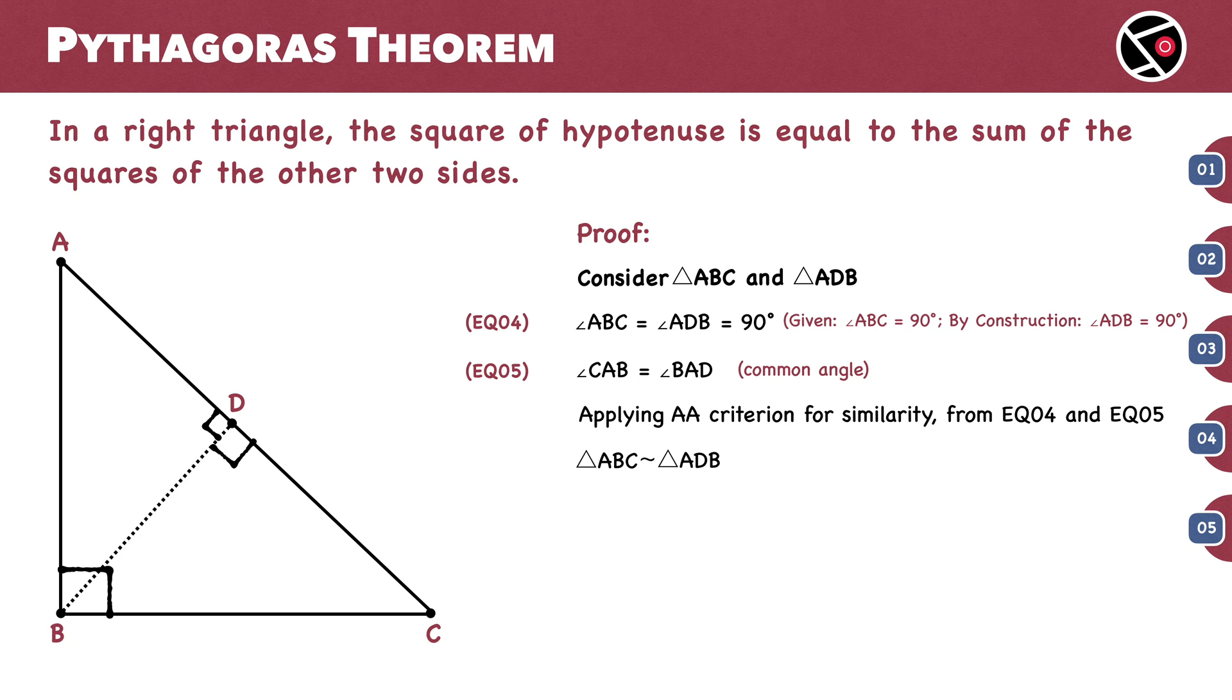Corresponding sides of similar triangles are proportional. So AC divided by AB equals AB divided by AD. Cross multiplying both sides of the equation, AC times AD equals AB squared. This is equation 6.